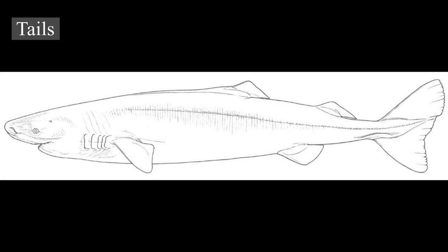Other tail adaptations help sharks catch prey more directly, such as the thresher shark's usage of its powerful, elongated upper lobe to stun fish and squid.